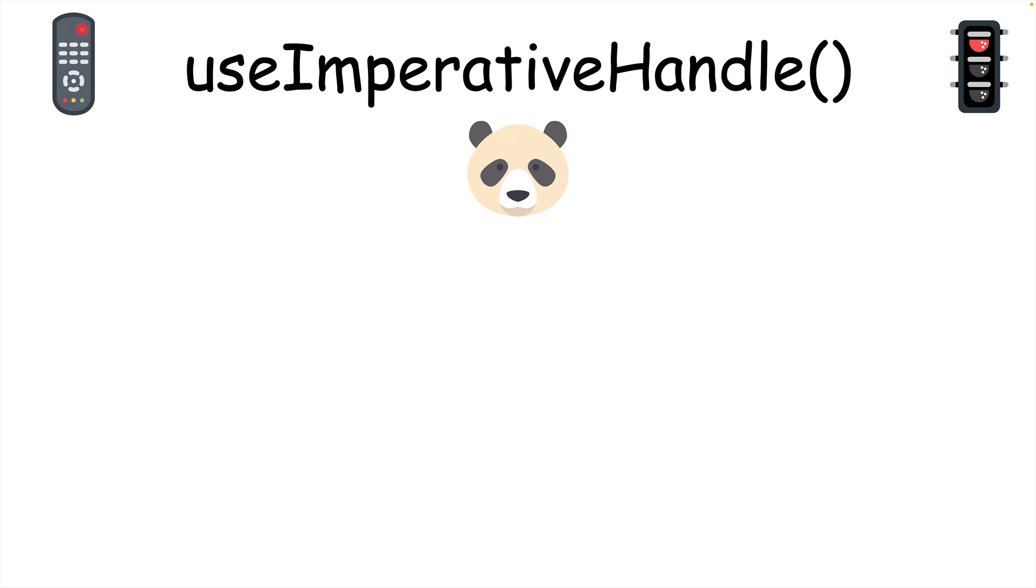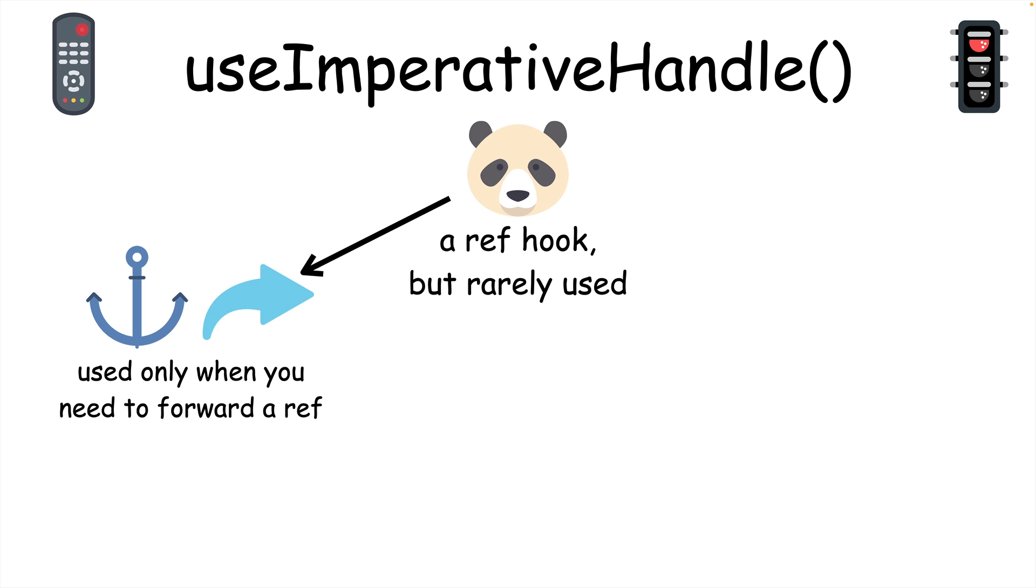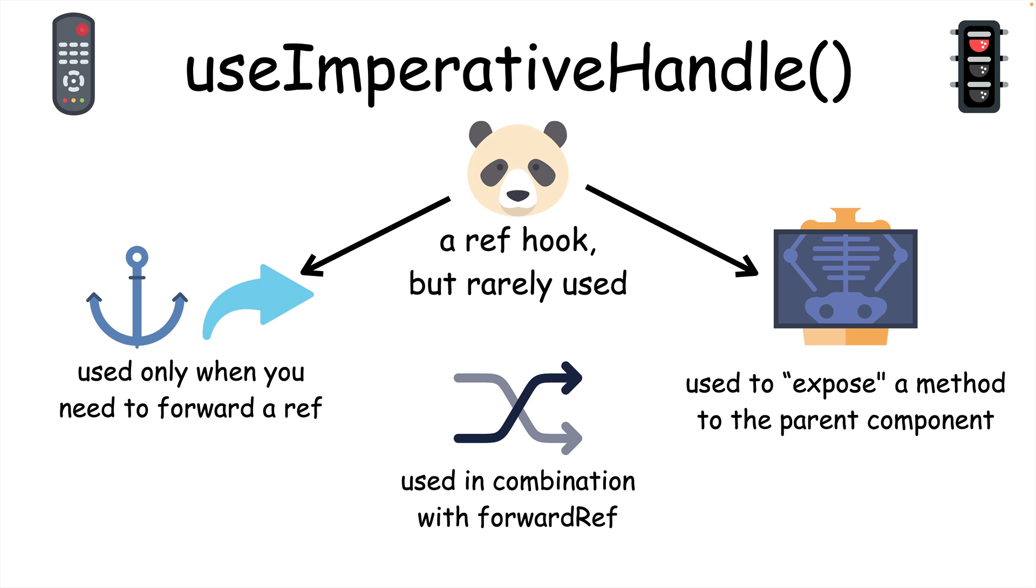useImperativeHandle is a type of ref hook, but rarely used. It's only necessary to use when you need to forward a ref, which means you need to pair it with the forwardRef function, and only if you also need to expose a method to the parent component that passed the ref.